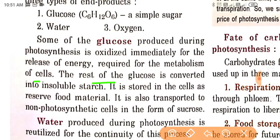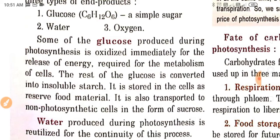The rest of the glucose is converted into soluble starch. It is stored in the cells as reserved food material. It is also transported to non-photosynthetic cells in the form of sucrose.